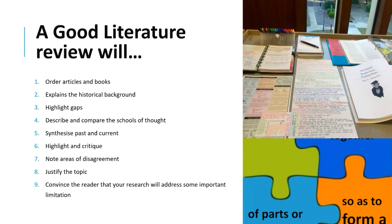Your literature review must synthesize past and current research and show how your research fits into the existing body. It has to have mostly current knowledge to show where the existing gaps are. You must note areas of disagreement, highlight and critique research, justify the topic you plan to investigate, and convince the reader — your supervisor or the examiner — that your research will address some important limitation or deficiency in the existing body of knowledge.